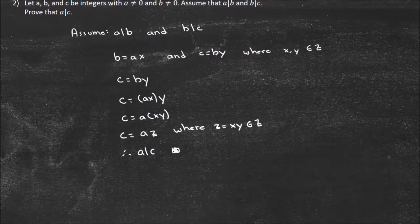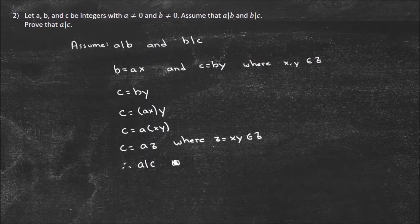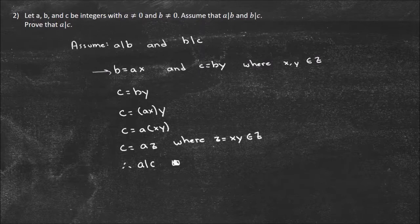That's the definition — that's the proof. As you can see with the direct proof, we start with what we know, write it out in a mathematical way — because the assumption 'a divides b and b divides c' isn't purely mathematical yet — and then go step by step to get where we want to go.